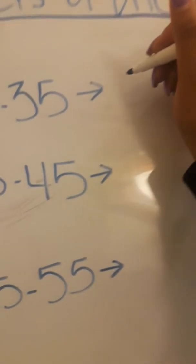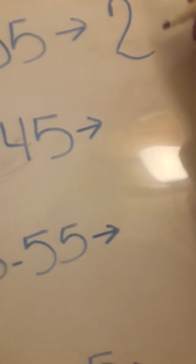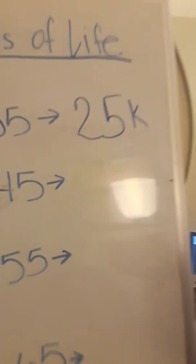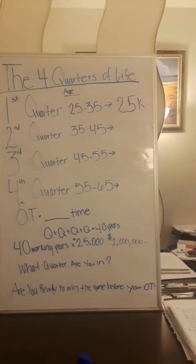So the first quarter of life here is the age range of 25 to 35 years old. If you are in this range, in this quarter, the first quarter of life, you should have about $25,000.